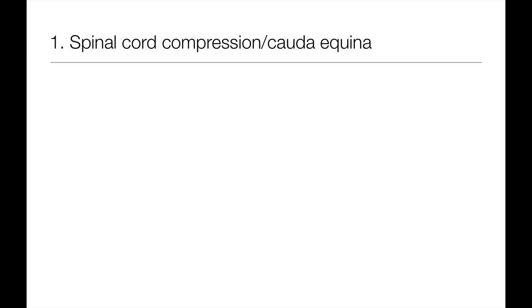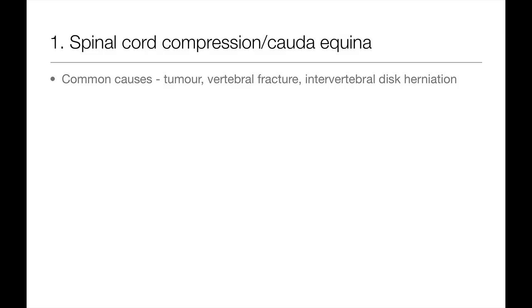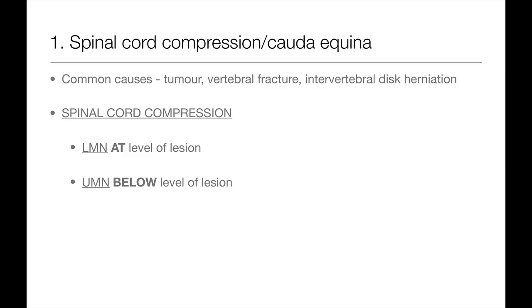Let's have a look at each of these sinister causes of back pain in more detail. The spinal cord or the cauda equina can become compressed by a tumour, a vertebral fracture, or from intervertebral disc herniation. In the case of spinal cord compression, patients usually have back pain at the level of the lesion, lower motor neurone symptoms at the level of the lesion, as well as upper motor neurone symptoms below the level of the lesion.